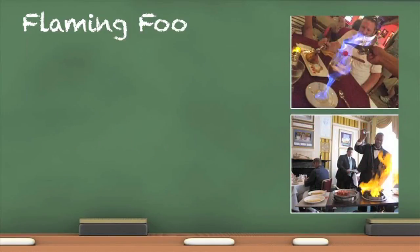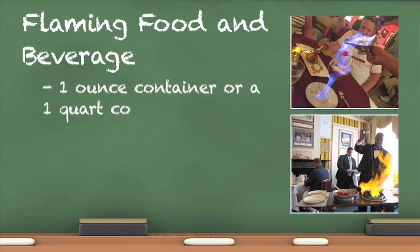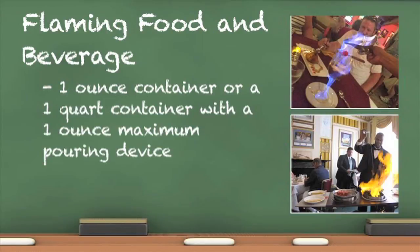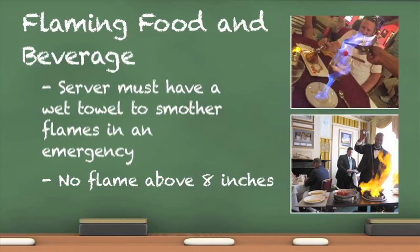Flaming food and beverage preparations are a rare occurrence in the City of San Diego, and the regulations governing this activity are very specific. Flammable or combustible liquids shall be dispensed from either a one-ounce container or a container of maximum one-quart capacity that only dispenses a maximum of one ounce at a time. The flame should never reach more than eight inches high. Pouring, ladling, or spooning flaming food is restricted to a maximum height of eight inches above the receiving receptacle. The server must have a wet towel available to smother the flames in the event of an emergency.